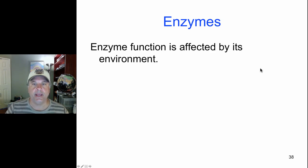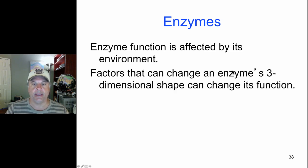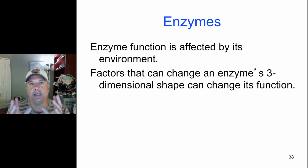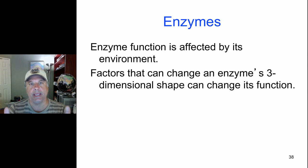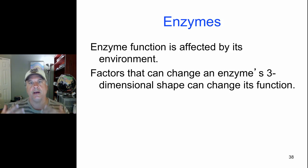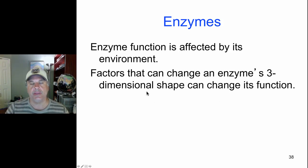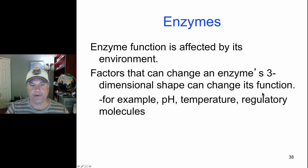Enzymes are affected by the environment they exist in, and any factor that affects an enzyme's three-dimensional shape can change its function. In protein biology, the structure of a protein is essential to its function — it dictates, for example, how the active site interacts with substrate. Function follows form in protein structure. So any factors that change the tertiary structure of a protein can alter its function. pH, temperature, and regulatory molecules can alter the shape of a protein and therefore affect its catalytic activity if it's an enzyme.